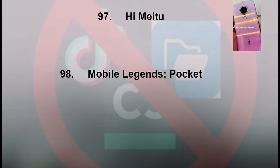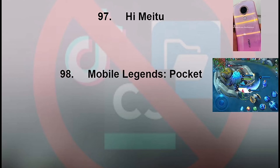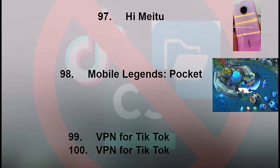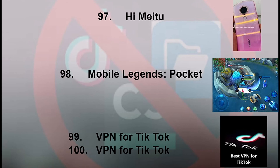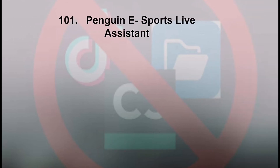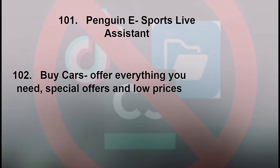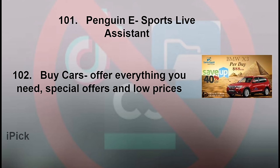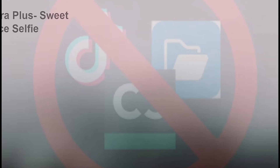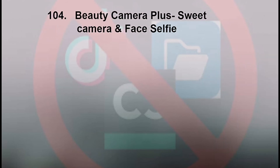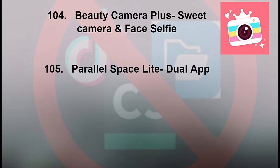98: Mobile Legends Pocket. 99 and 100: VPN for TikTok. 101: Penguin Esports Live Assistant. 102: Buy Cars - Offer Everything You Need, Special Offers and Low Prices. 103: Eye Pic. 104: Beauty Camera Plus Sweet Camera and Face Selfie. 105: Parallel Space Light Dual App.